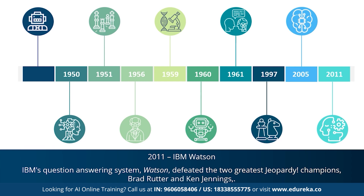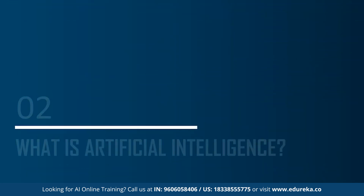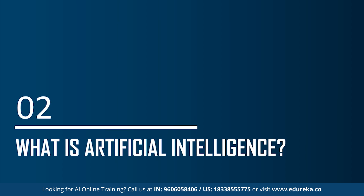That was a brief history of AI. Since the emergence of artificial intelligence in the 1950s, we have seen exponential growth in its potential. AI covers domains such as machine learning, deep learning, neural networks, natural language processing, knowledge base, expert systems, and so on. Now let's move on and understand what exactly artificial intelligence is.